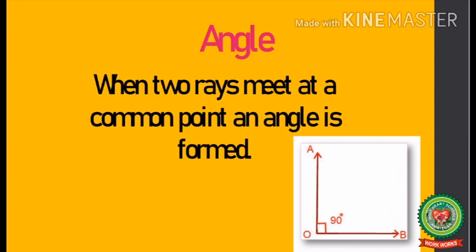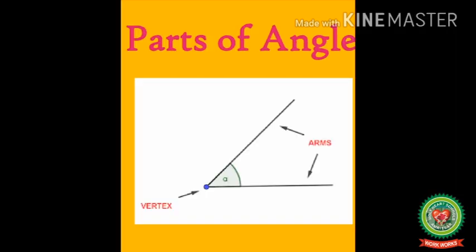First of all, let us revise what is an angle. When two rays meet at a common point, an angle is formed. Let's revise the parts of an angle. These two are the two arms of an angle, and the vertex is the point where the two arms meet.